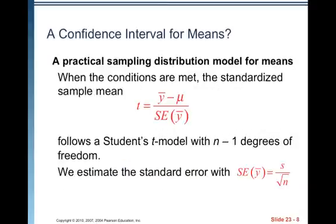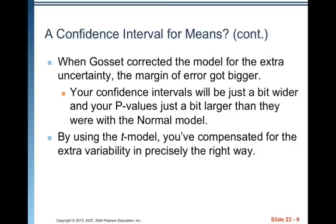A confidence interval for means — a practical sampling distribution model for means. When the conditions are met, the standardized sample mean T equals y-bar minus mu over the standard error of y-bar, and it follows a Student's t model with N minus 1 degrees of freedom. We estimate the standard error as s over square root of N. When Gossett corrected the model for the extra uncertainty, the margin of error got bigger, so your confidence intervals will be just a bit wider and your p-values just a bit larger than with the normal model.